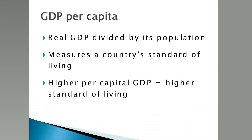Real GDP per capita is the measurement most often used to measure the standard of living. It is calculated by dividing the nation's real GDP by its population — what each person's share would be if the total output of the country was divided equally among its citizens. Standards of living refers to the quality of life in the country, and it increases as the GDP per capita increases.